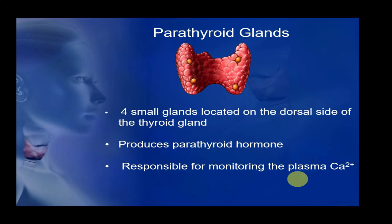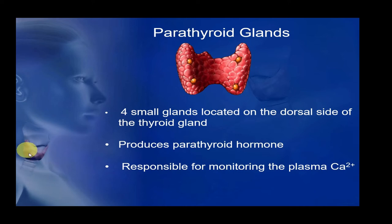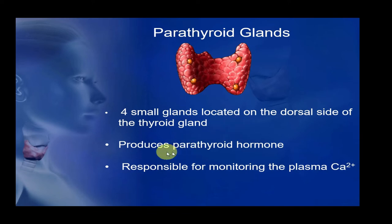The most important hormone for calcium and bone homeostasis is parathyroid hormone, released from the parathyroid glands. There are four small glands located on the dorsal—back—side of the thyroid. These four parathyroid glands produce parathyroid hormone, whose main function is to monitor plasma calcium concentration and maintain it through increased or decreased activity.